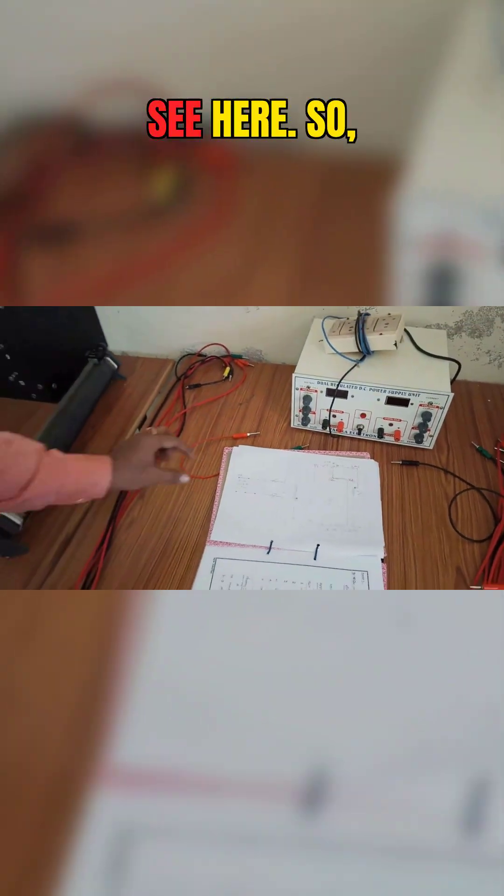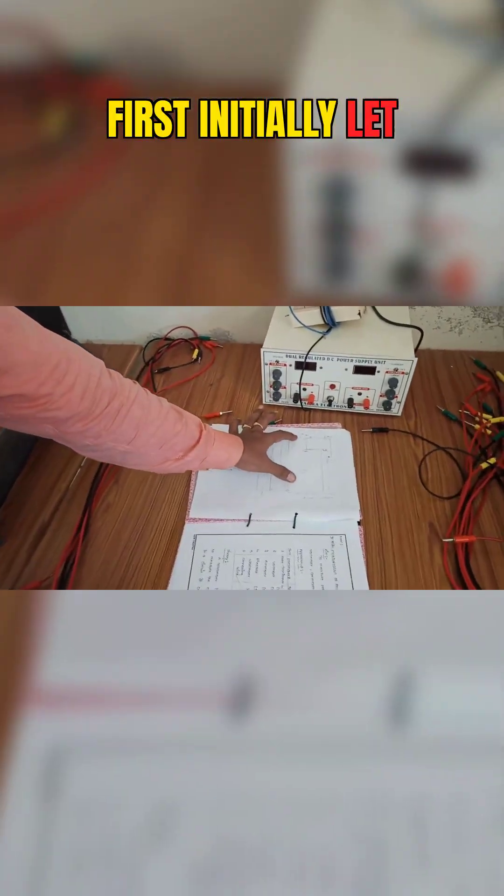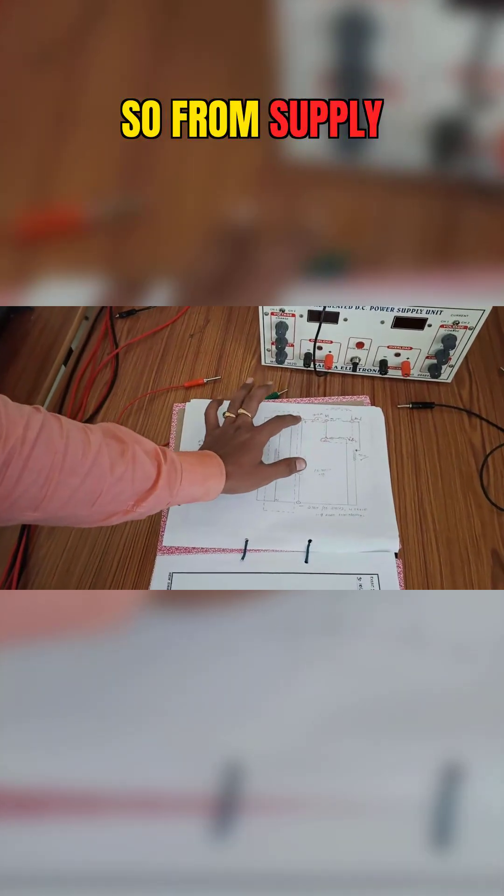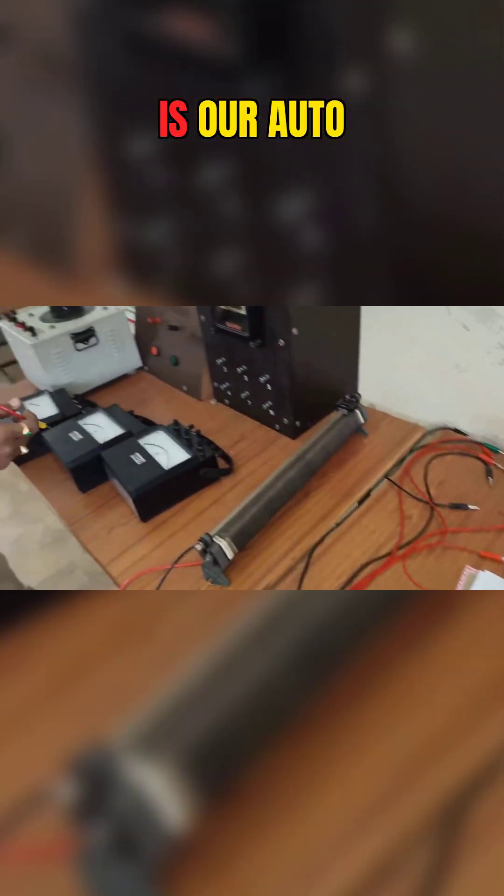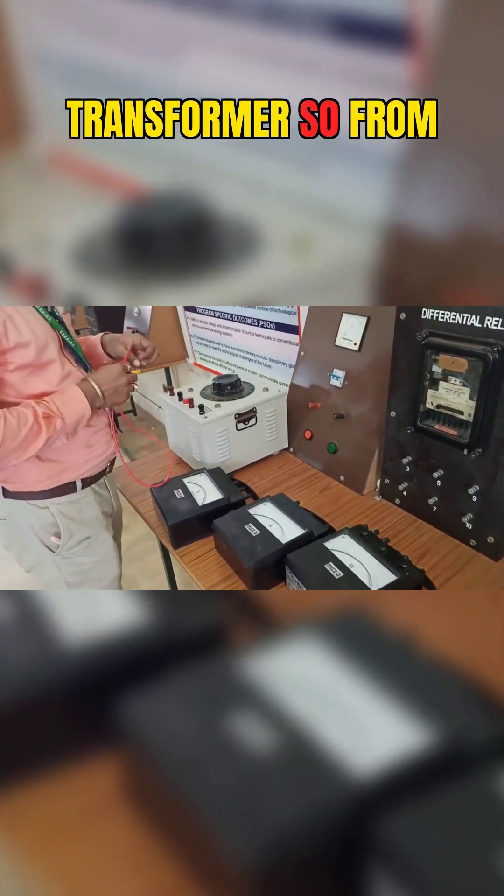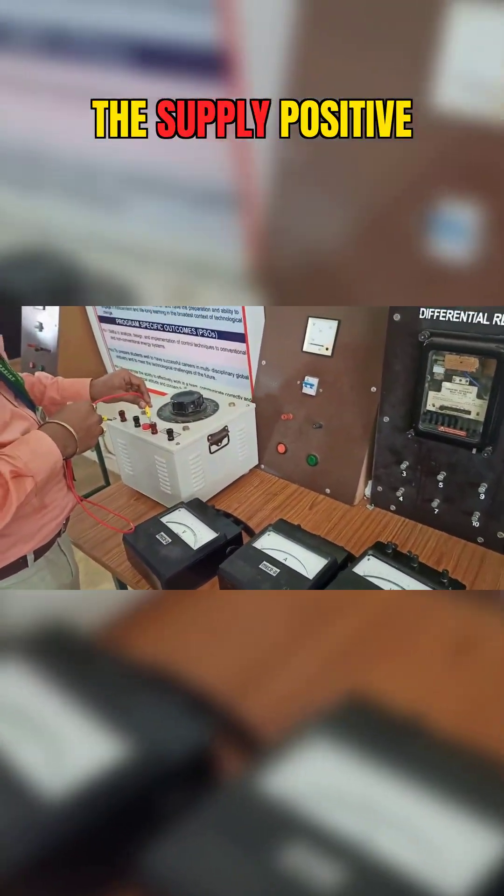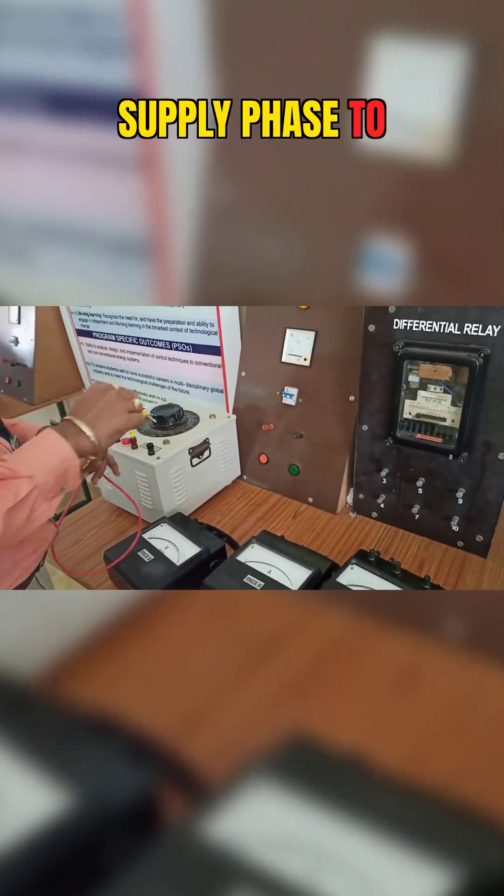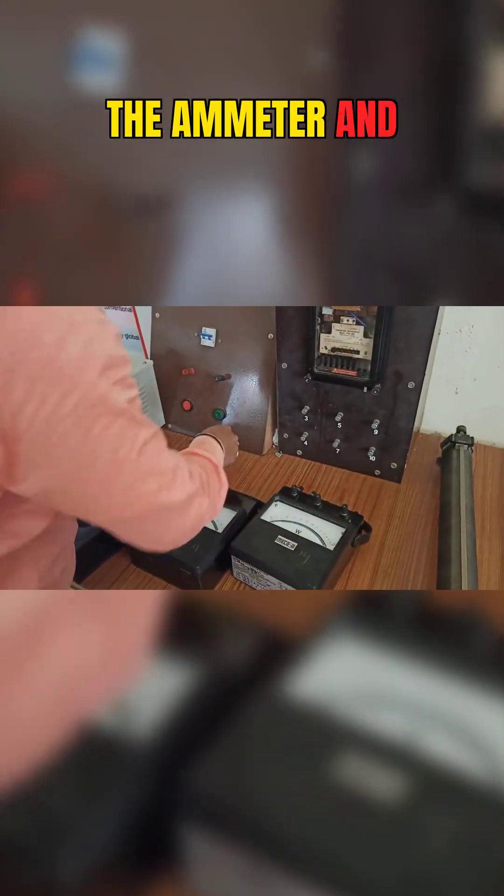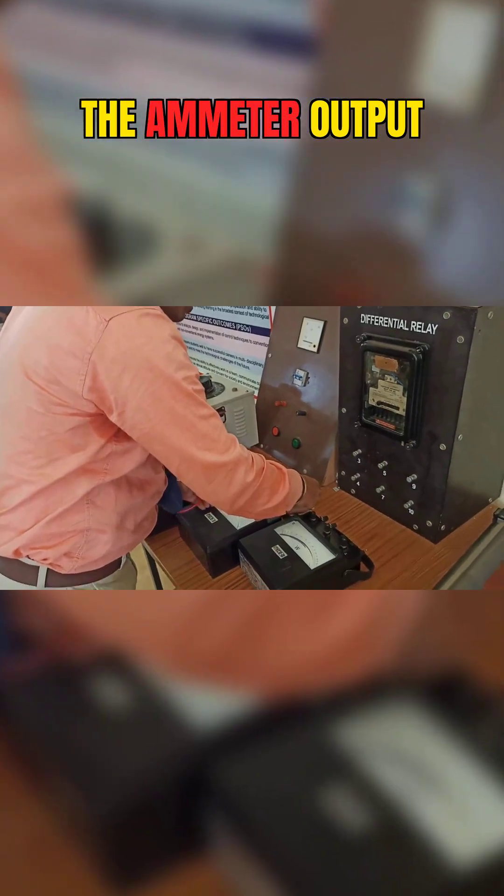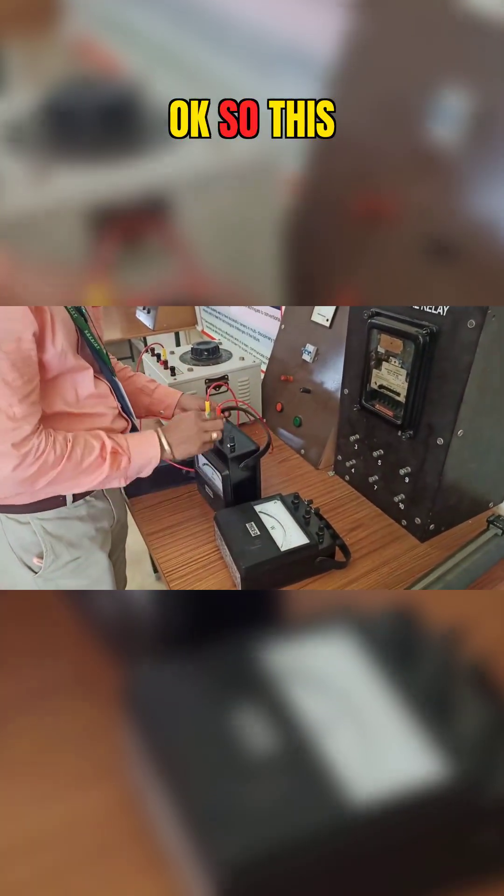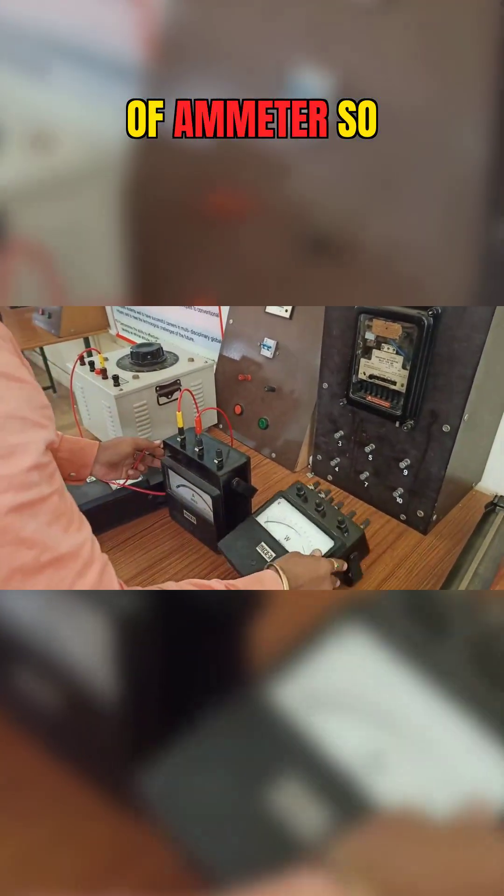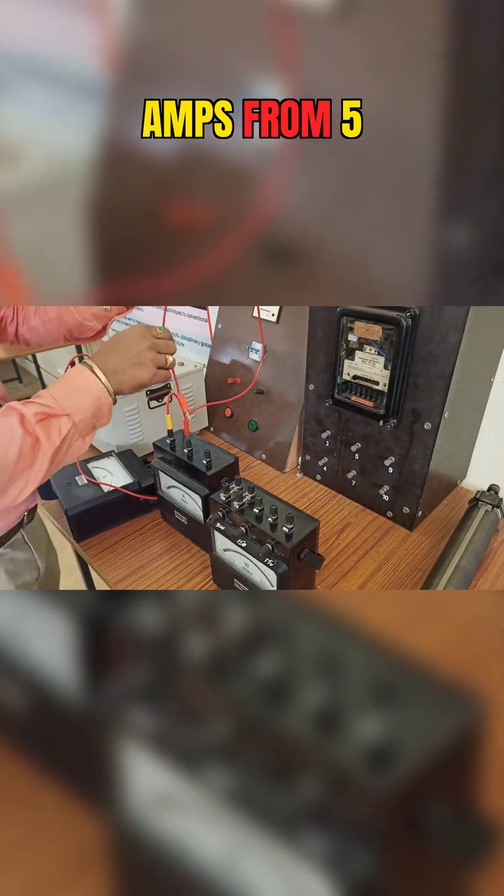Let us give the connections. First, we'll create this loop from supply to ammeter. You can see here this is our auto transformer. From the supply positive terminal—I mean supply phase—to the ammeter and ammeter output. This is the ammeter output. The ammeter range is 5 amperes.